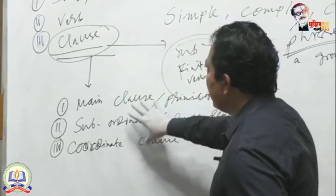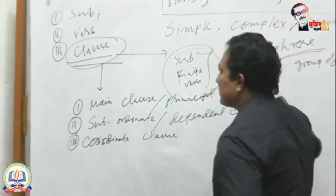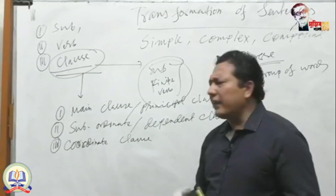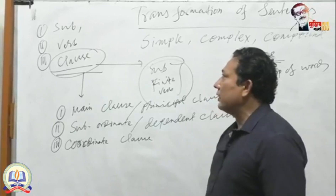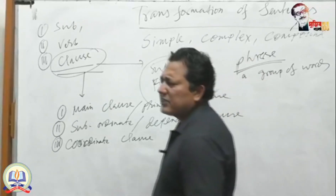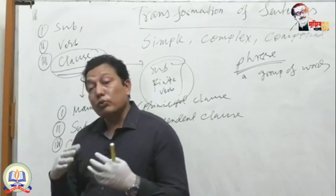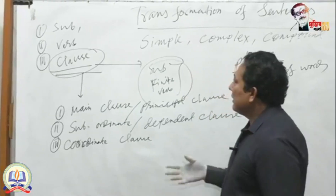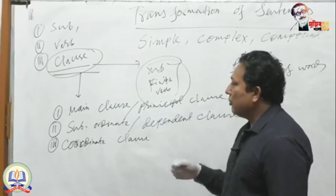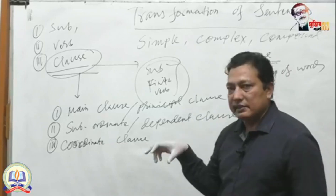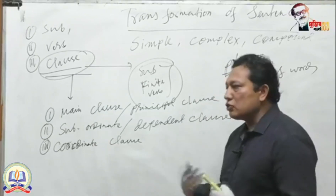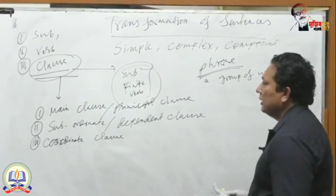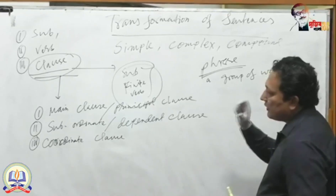Many students feel very scared when they see that they have to interchange among simple, complex, and compound sentences. Why? Because they have to memorize some important characteristics. But it is very important and easy to memorize — easy to recollect all the characteristics of these sentences. It is not very tough if you just think about the special characteristics of each type.